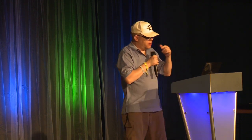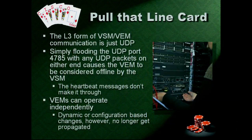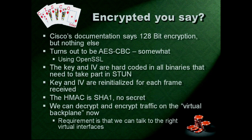If you run the Layer 3 UDP configuration, it's really hard to do traffic rate limiting — which is why Cisco didn't do that. Simply flooding the UDP port they communicate on means the VEM is no longer visible to the VSM and gets dropped from the virtual switch configuration.